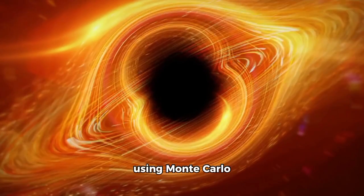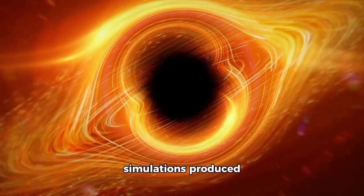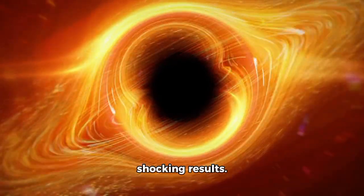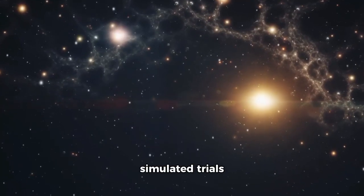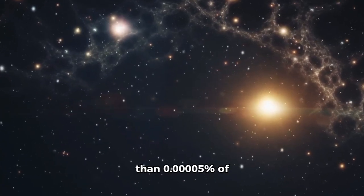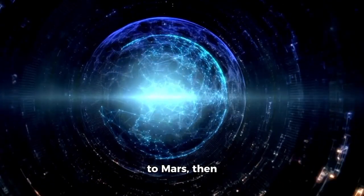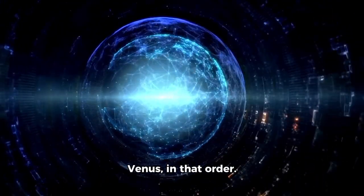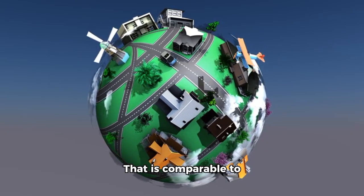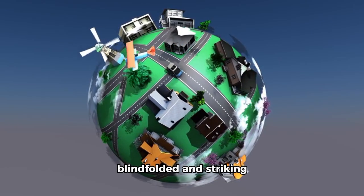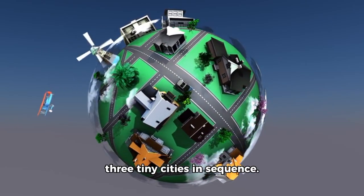Probability studies using Monte Carlo simulations produced shocking results. Billions of simulated trials showed that fewer than 0.0005% of similar objects would pass so close to Mars, then Venus, in that order. That is comparable to hitting a spinning globe blindfolded and striking three tiny cities in sequence. The actual path of 3i Atlas stood out as a red dot in a vast sea of near-misses, an isolated point in the statistical universe.